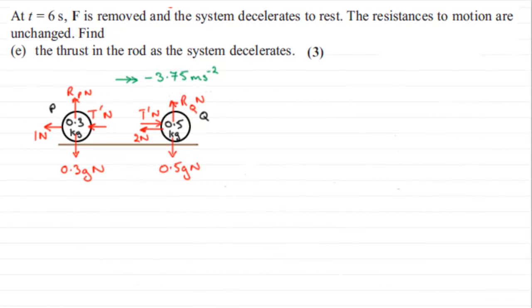Hi. Now, in the last part of this question, we've got to find out the thrust in the rod as the system decelerates. And in the previous part, we found out that the acceleration was minus 3.75 meters per second per second.